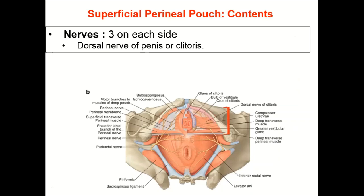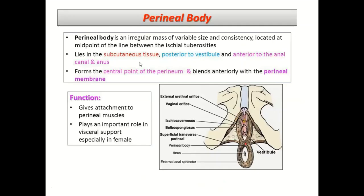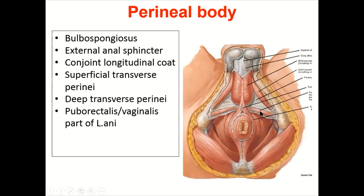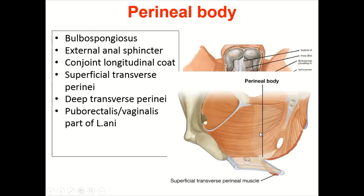The perineal body is an irregular mass of variable size and consistency located at the midpoint of the line between the ischial tuberosities. It forms the central part of the perineum, lying in the subcutaneous tissue just behind the vestibule and anterior to the anal canal. It gives attachment to perineal muscles and plays an important role in visceral support, especially in females. Muscles attached include bulbospongiosus, superficial and deep transverse perinei, external anal sphincter, conjoint longitudinal coat of the anal canal, deep transverse perinei, and the puborectalis and pubovaginalis parts of levator ani.